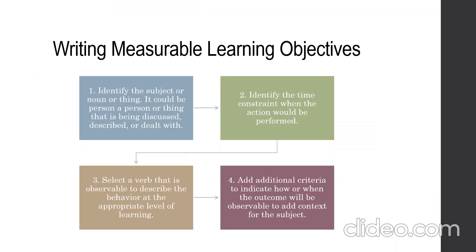How are you going to write measurable learning objectives? First, identify the subject — the person or thing being discussed, described, or dealt with. Second, identify the time constraint for when the action would be performed by the subject. Third, select a verb that is observable to describe the behavior at the appropriate level of learning. Lastly, add additional criteria to indicate how or when the outcome will be observable, to add context for the subject.